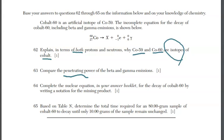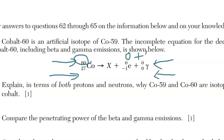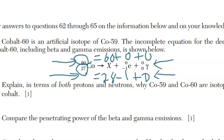For question 64, complete the nuclear equation for the decay of cobalt-60 by writing the notation for the missing product X. Nuclear equations require that mass numbers and atomic numbers balance on either side. On the left we have mass number 60 and atomic number 27. With a beta particle contributing 0 to mass and −1 to atomic number, and a gamma contributing 0 to both, the missing particle must have mass number 60 and atomic number 28. Let's use the periodic table to identify element 28.